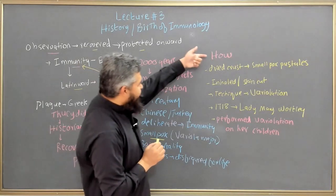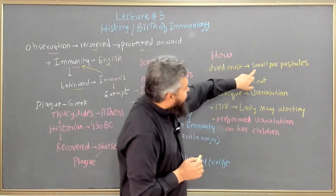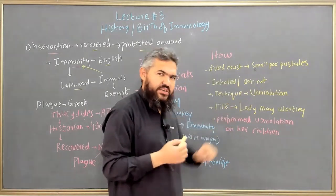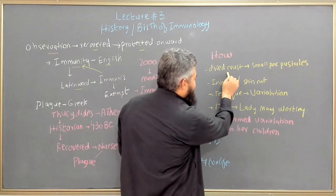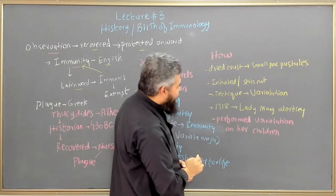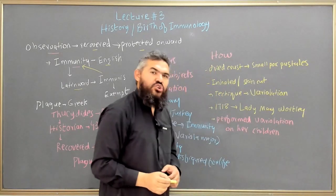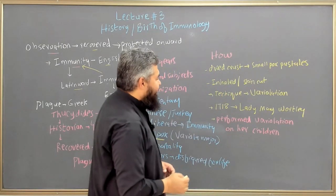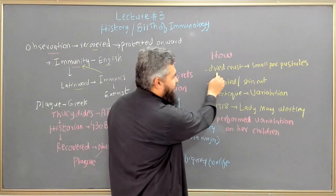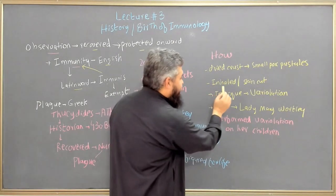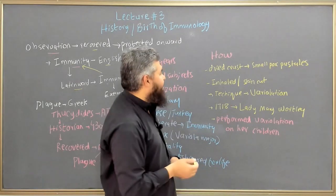So these Chinese and Turks were interested in creating immunity against smallpox. What they did was take the dried crust from smallpox pustules of infected individuals and give it to healthy individuals either by inhalation or by making small cuts in their skin and introducing the dried crust. This technique became known as variolation.